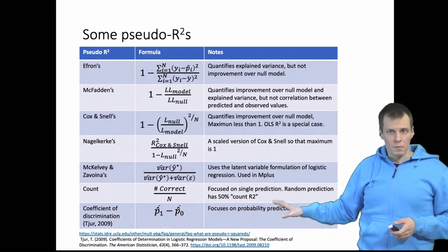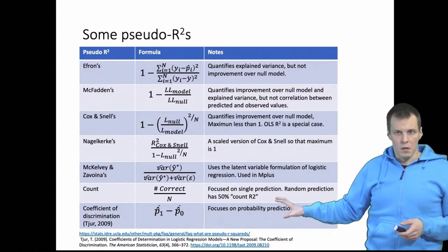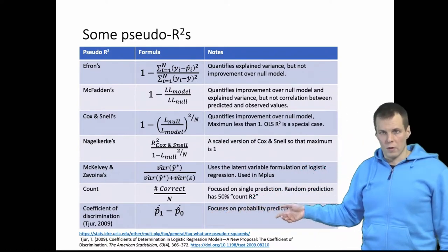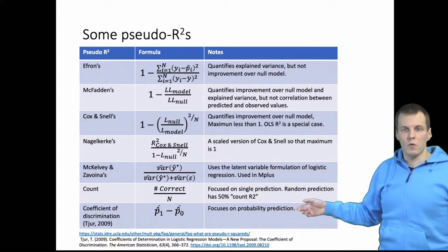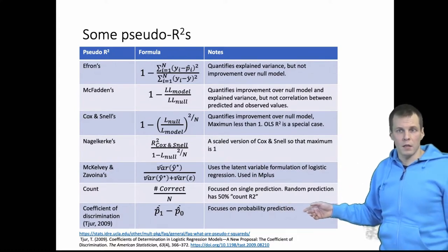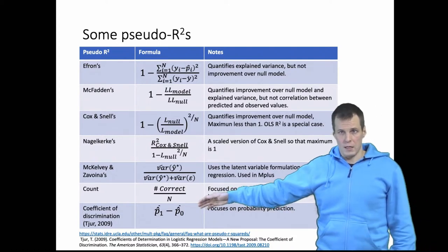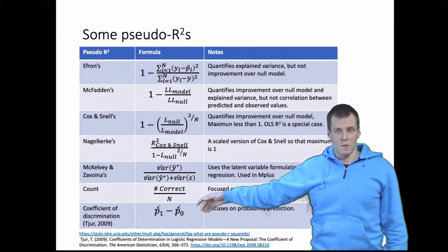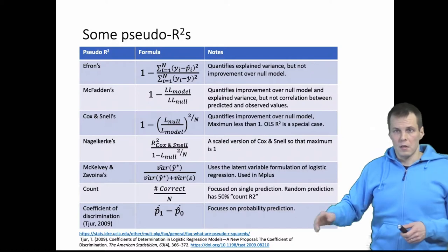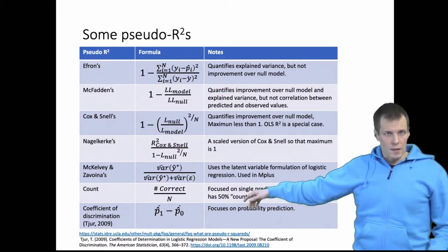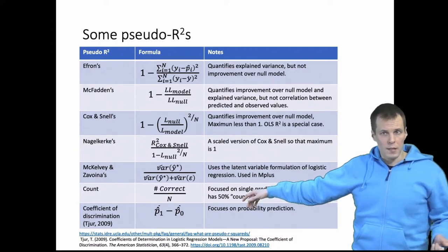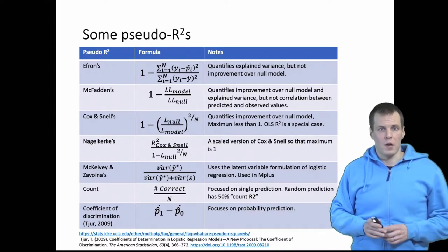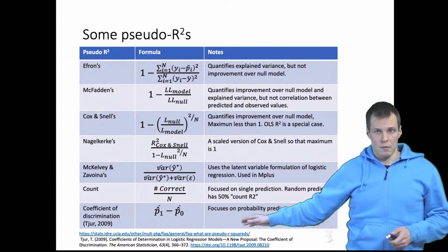Then we have the coefficient of discrimination, also called Tjur's pseudo R squared, introduced by Tjur in 2009. The idea is that we focus on the probability of predictions: we calculate the mean predicted probability for cases with a value of one, the mean predicted probability for cases with a value of zero, and then take the difference between these means. This quantifies whether the model predicts successes and failures differently — a large difference implies good predictive performance and a high pseudo R squared.